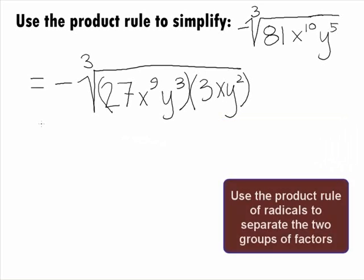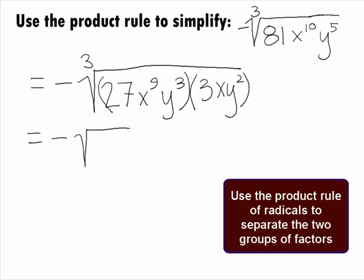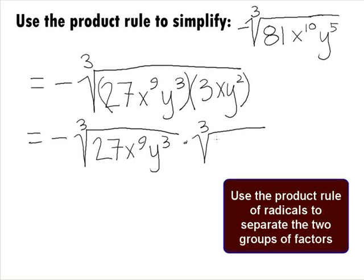Since we have a product, we can apply the Product Rule of Radicals and rewrite this as the negative cube root of 27x to the 9th y to the 3rd times the cube root of 3xy squared.